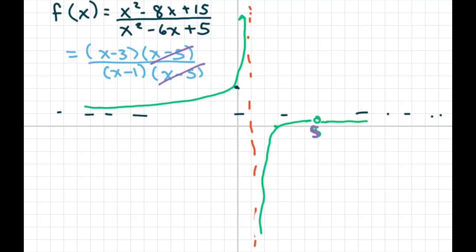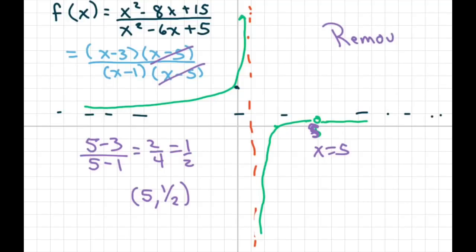I went ahead and graphed it, and I plug in five to the reduced equation. I get five minus three divided by five minus one, that's going to equal two fourths, which equals one half. So your hole occurs at five comma one half. There's a discontinuity at x equals five, and this one is considered a removable discontinuity. That's your examples. Thank you, have a nice day.